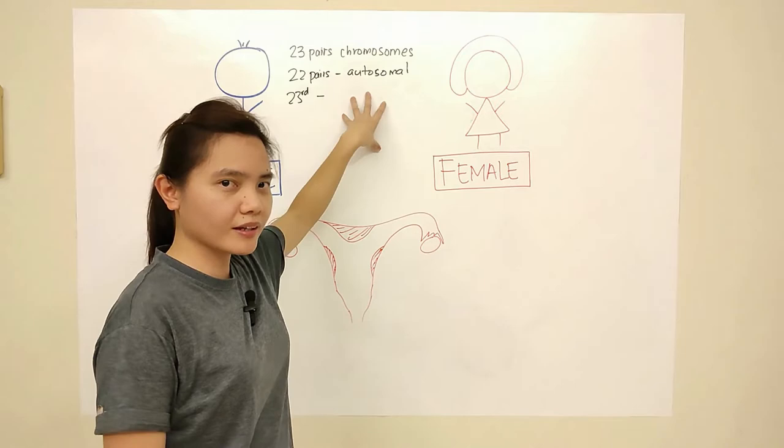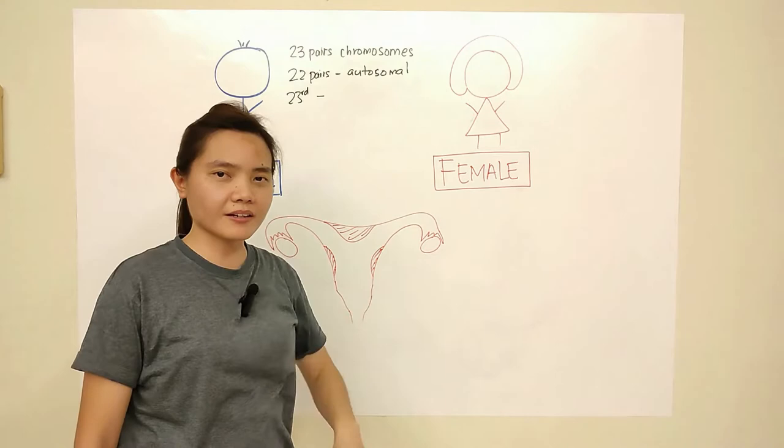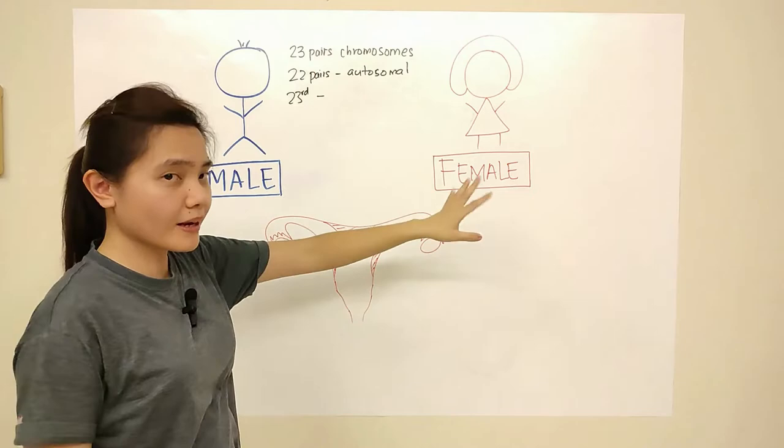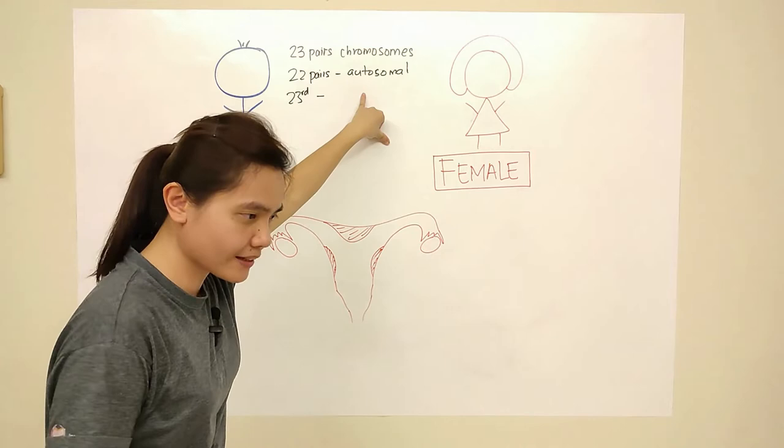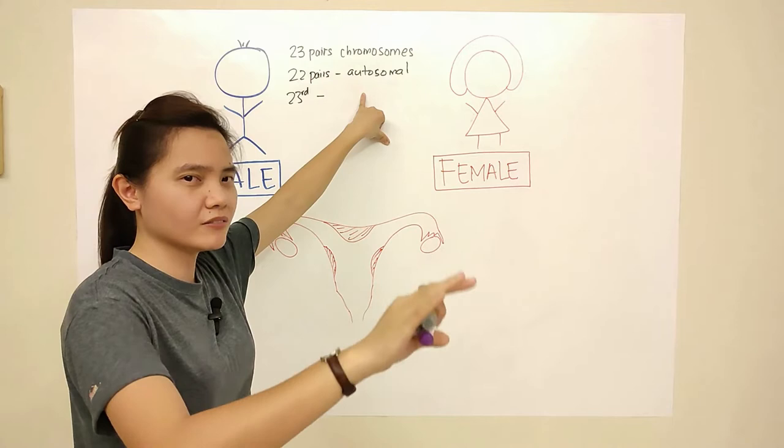So we have 23 pairs of chromosomes, which are actually 46 chromosomes. Regardless of male or female, humans have 23 pairs of chromosomes. Out of 23 pairs, 22 pairs are autosomal. Autosomal means they are not sex chromosomes — they are related mainly to the metabolic activity of the body, like the production of enzymes and other proteins.